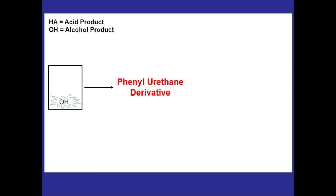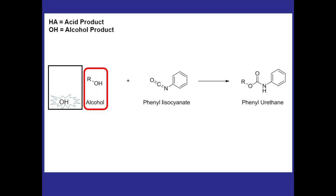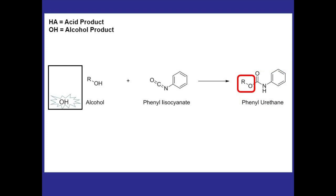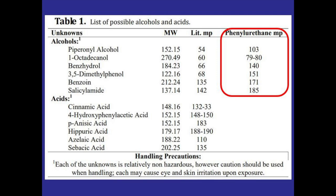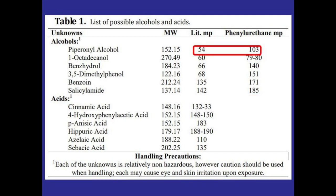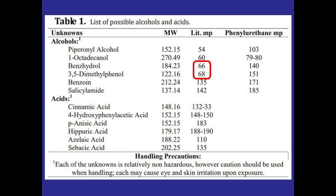Once we've acquired the melting point range, we'll use 100 milligrams of the remaining crystals to form a phenylurethane derivative. The alcohol reacts with phenyl isocyanate to form this phenylurethane derivative — a different solid from the original unknown alcohol with varying melting points depending on the R group. Literature values for derivative melting points are in the table, and comparing the derivative melting point to the original helps identify exactly which alcohol we had, especially useful for distinguishing compounds with similar melting points like benzhydryl and 3,5-dimethylphenol.